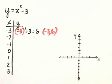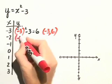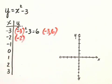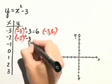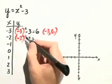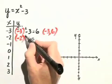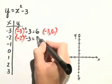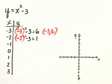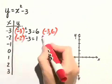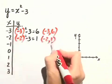Next, we'll substitute negative 2 in for x. So we have negative 2 squared minus 3. Negative 2, when we square it, is equal to positive 4, minus 3 is equal to 1. So therefore, this point will be represented by an x-coordinate of negative 2 and a y-coordinate of 1.